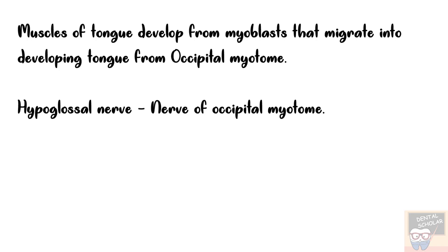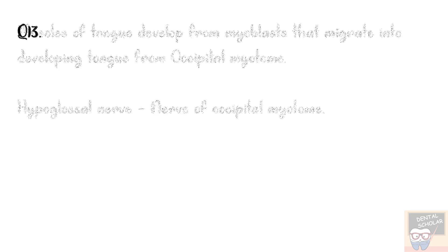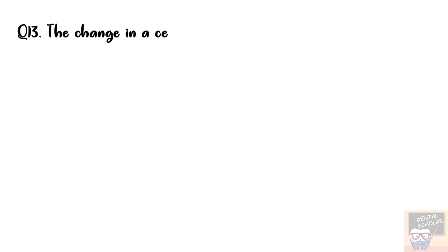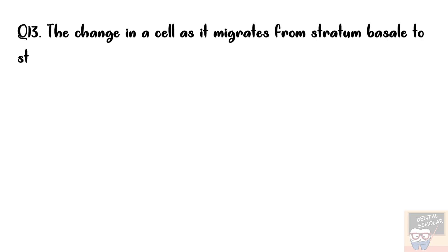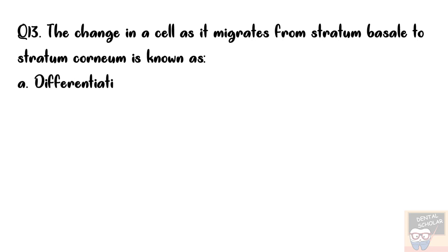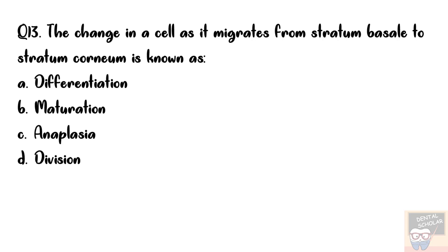Question number 13: The change in a cell as it migrates from stratum basale to stratum corneum is known as? Options are differentiation, maturation, anaplasia, and division. The answer is option A, differentiation.